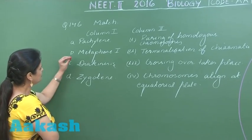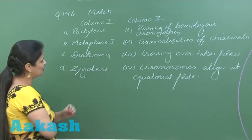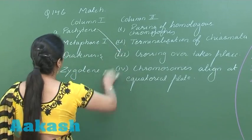Pachytene stage—this is the substage of prophase 1 and during this stage crossing over occurs. So this is the right option.